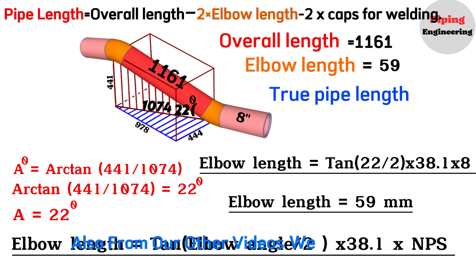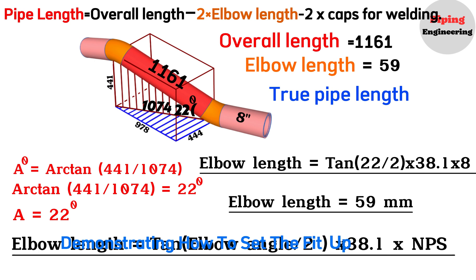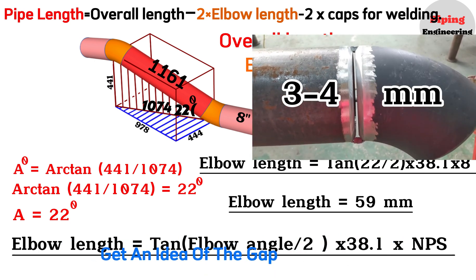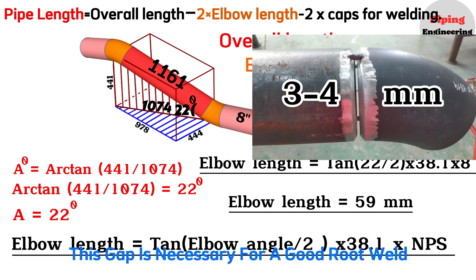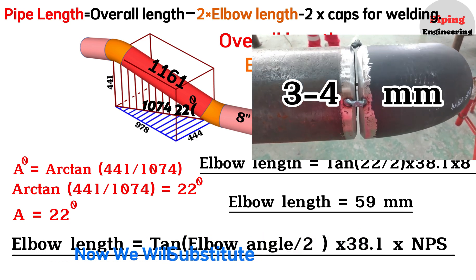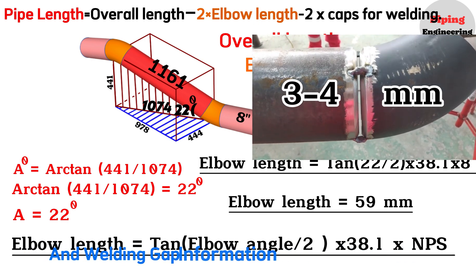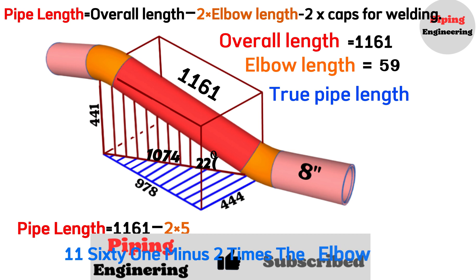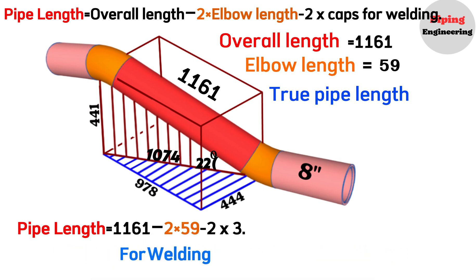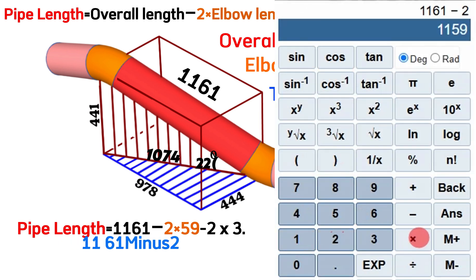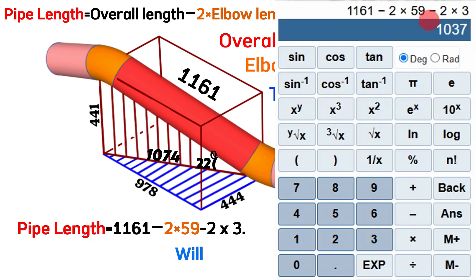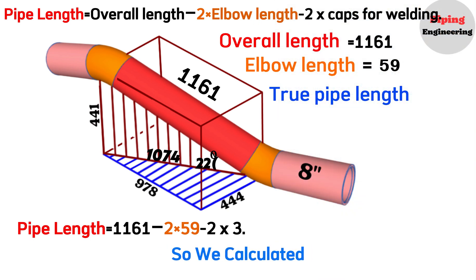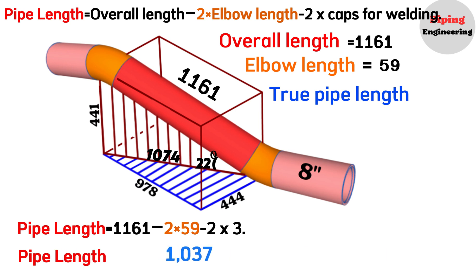From our other videos, we learned that during fit-up a small gap is required for welding — approximately 3 to 4 millimeters. This gap is necessary for a good root weld. Now let's find the true pipe length. Substituting our values into the formula: pipe length equals the overall length 1,161 minus 2 times the elbow length 59, minus 2 times 3 for the welding gaps. So 1,161 minus 118 minus 6 equals 1,037 mm. The pipe length between the two elbows is 1,037 millimeters.